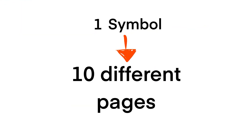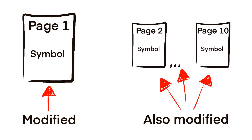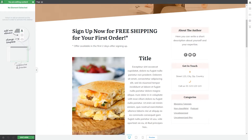However, if you do the same thing with a symbol element — meaning that you first save an element as a symbol and then load it on 10 different pages — you can apply changes to a symbol from only one of the pages and the element will be modified on the other nine pages as well. So this is the main difference between the two: symbols are synchronized while templates are not.